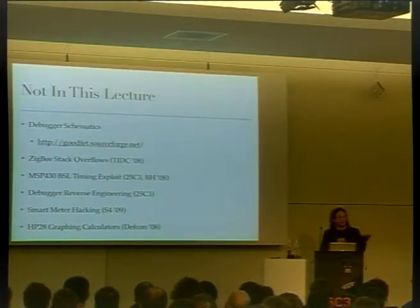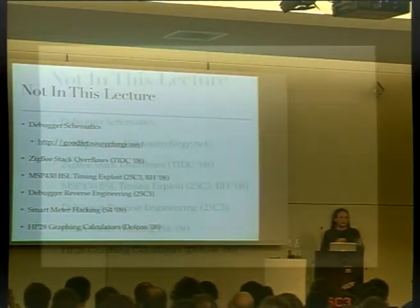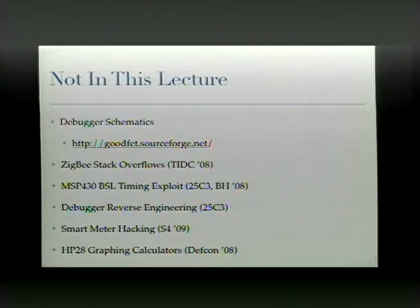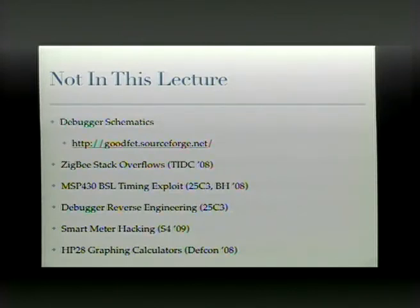You have a USB-to-serial chip talking to an MSP430 microcontroller which runs custom C code. It has a bunch of digital I/O pins for talking to digital I/O pins, and it has a digital-to-analog converter with 12-bit accuracy that it uses to power the target. You can just write a value into that register and immediately raise or drop the target voltage. In previous lectures, I discussed Zigbee stack overflows for actually injecting code into a running wireless sensor node.